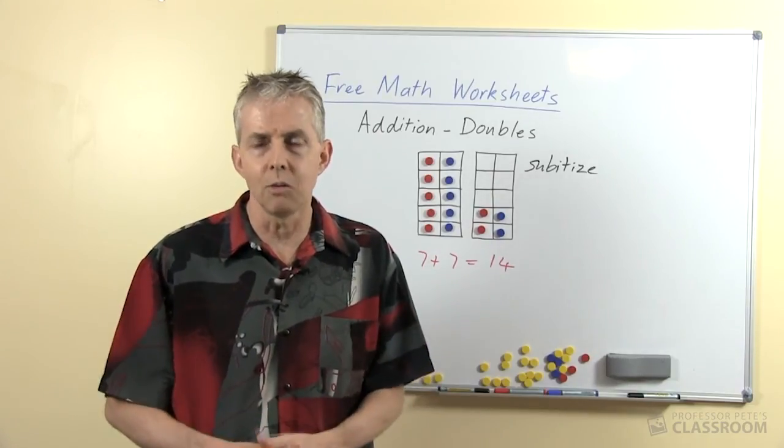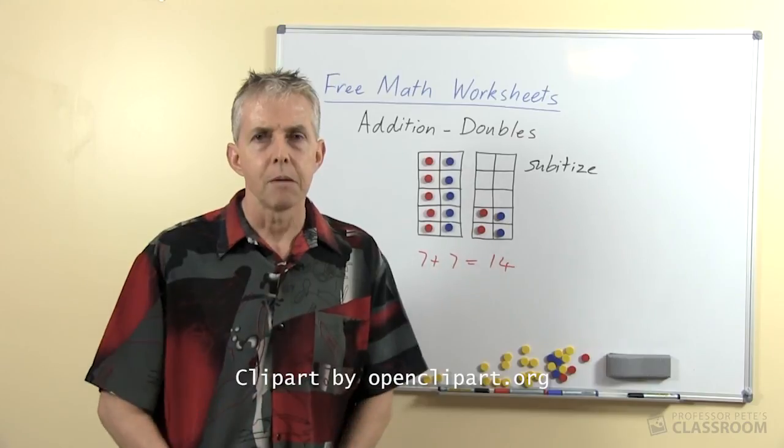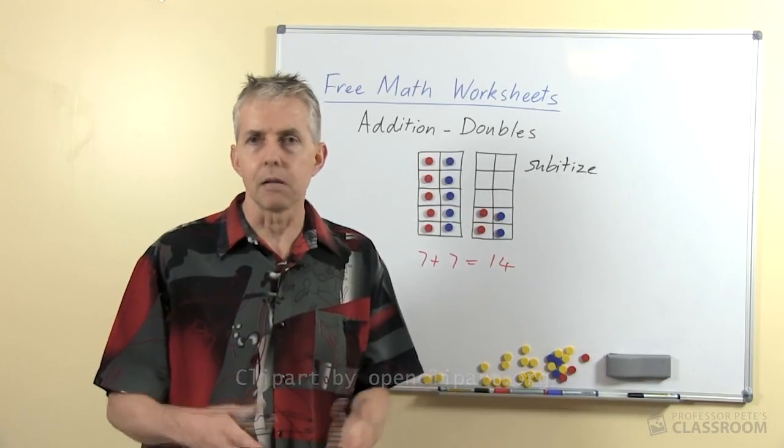Double 10 is 20 is a nice easy one, there's lots of examples of having pairs of 10 making 20.